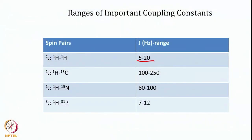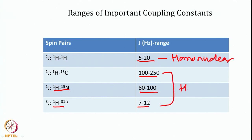There are ranges of coupling constants. Homonuclear couplings are generally small compared to heteronuclear. For proton-proton, two-bond coupling is generally 5 to 20 Hz. Whereas for one-bond coupling in heteronuclear systems like 13C and proton, it is quite large — 100 to 250 Hz. For nitrogen-proton coupling it is 80 to 100 Hz, and phosphorus-proton coupling is typically around 17 to 12 Hz. These proton-proton couplings are called homonuclear coupling, and the couplings involving 13C, 15N, or phosphorus are called heteronuclear coupling.